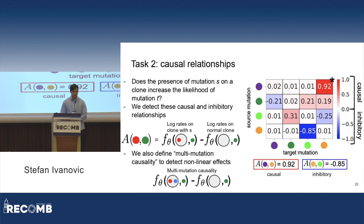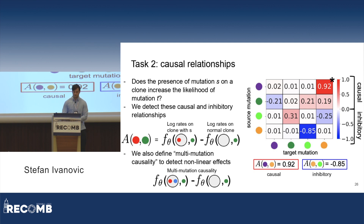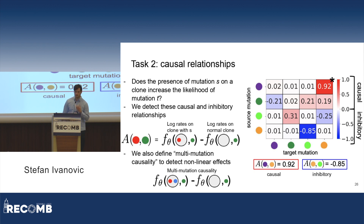Another thing we predict is causal relationships. By causality, we mean temporal patterns of co-occurrence and mutual exclusivity on a clonal level. The question is: does the presence of mutation S on a clone increase the likelihood of mutation T occurring on that clone, or does it decrease the likelihood, or have no effect? To measure this, we look at the rate of the green mutation when the red mutation is present relative to the rate of the green mutation when the red mutation is not present. We also look at multi-mutation causality to detect nonlinear effects — for example, the red mutation together with the blue mutation and how that combination affects the rate of the green mutation.